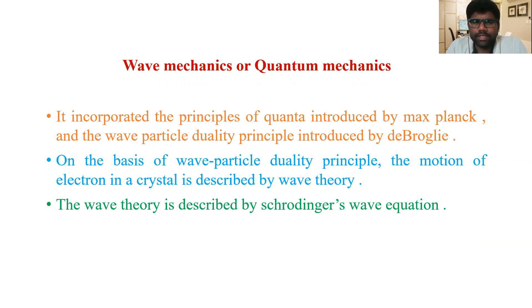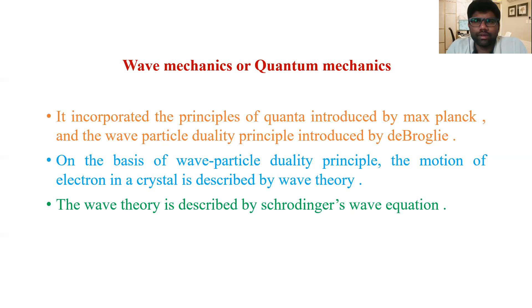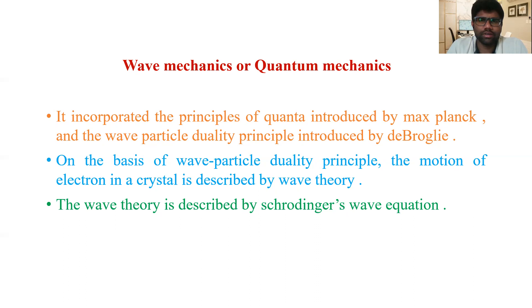On the basis of wave-particle duality, the motion of an electron in a crystal can be described by wave theory. To understand the behavior of an electron in a crystal, we get closer to experimental results only after formulating it based on quantum mechanics. This wave theory is described by Schrödinger's wave equation, which provides a mathematical model for dealing with such systems.